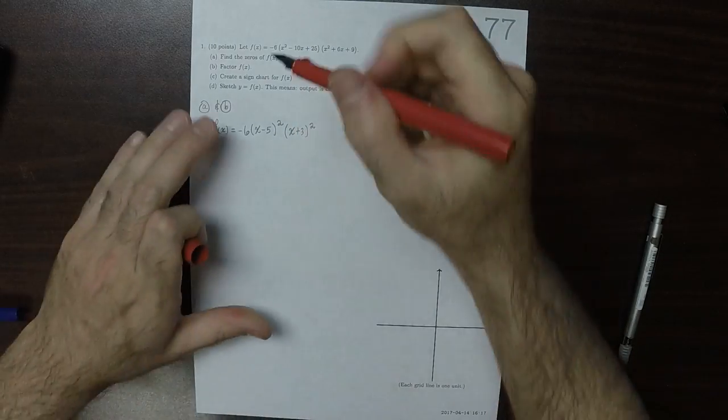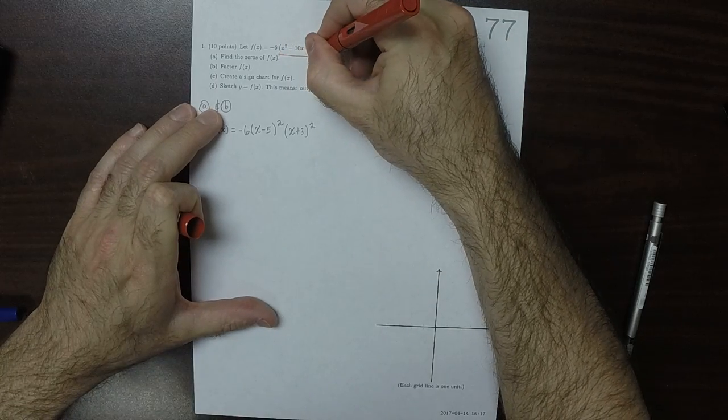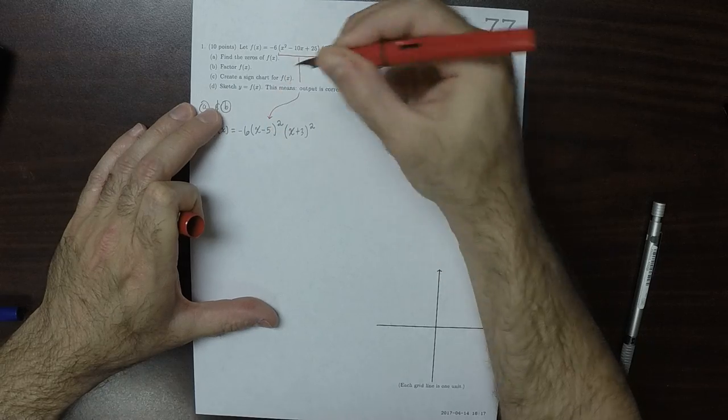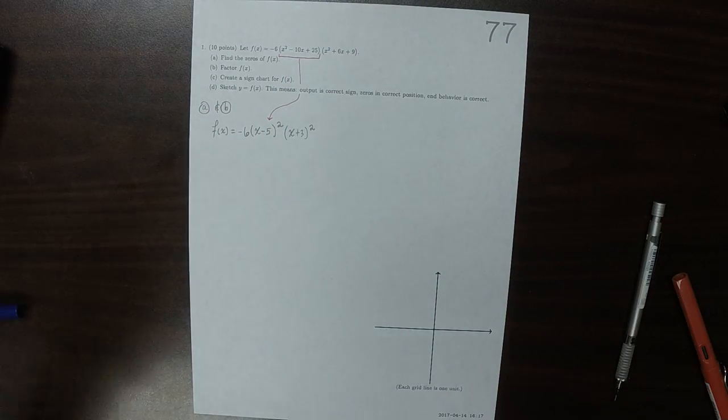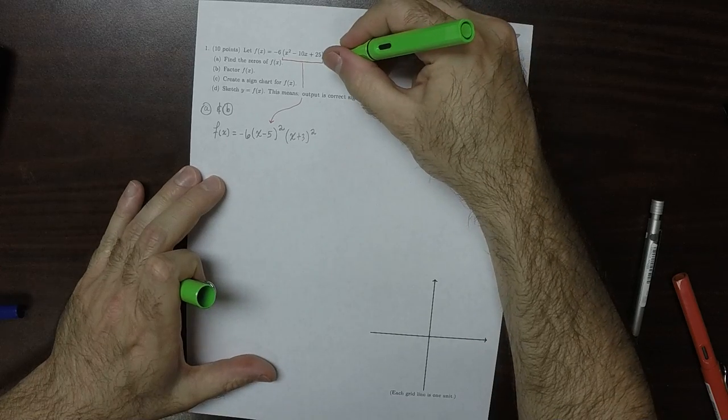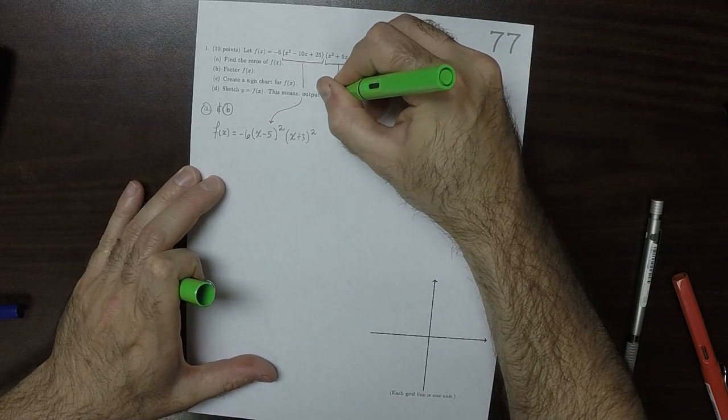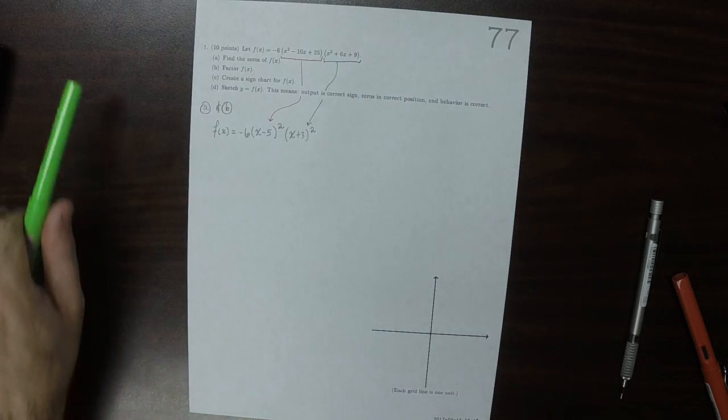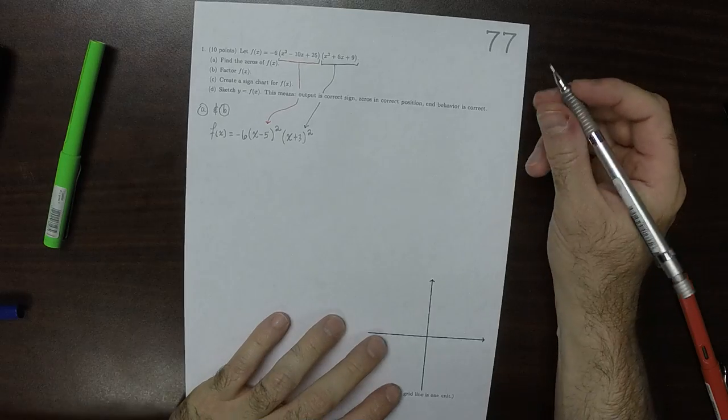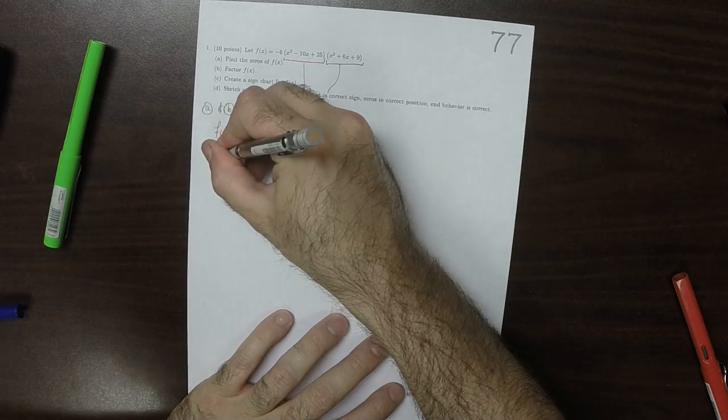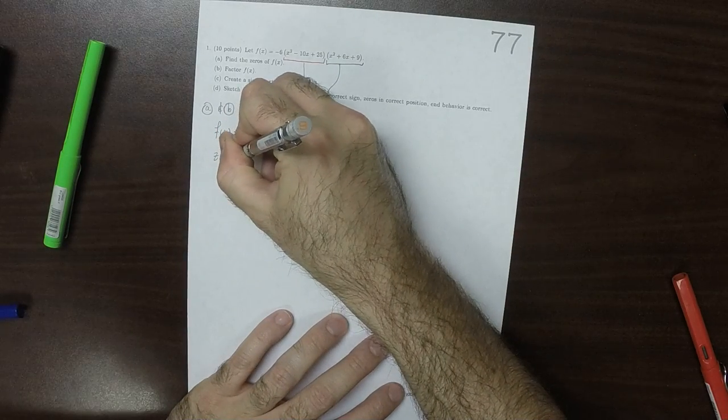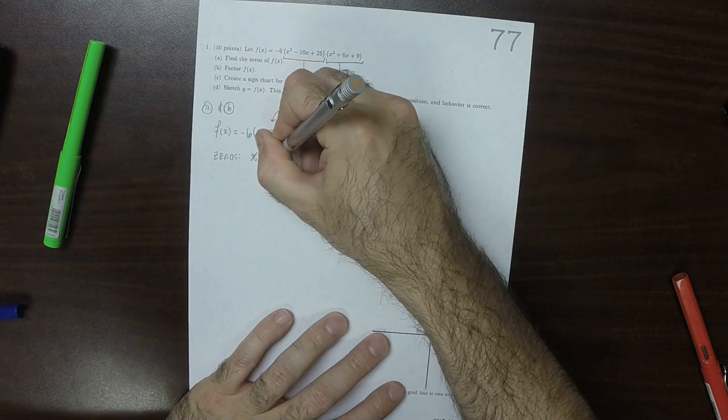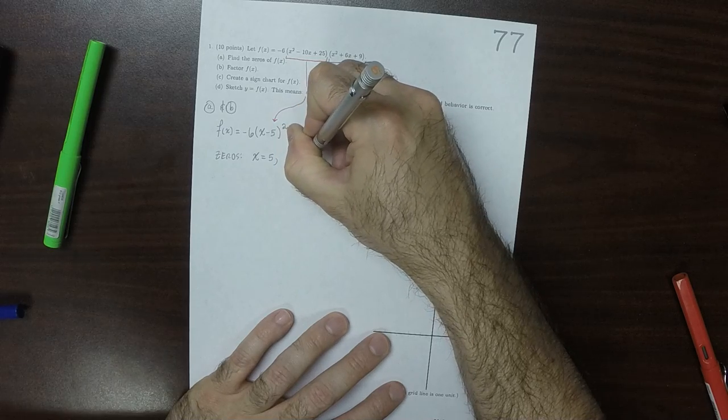Which is to say that this one factored into that, and this one factored into that. So that's the factorization, and the zeros can be read from that factorization. These zeros are x equals 5 and x equals negative 3.